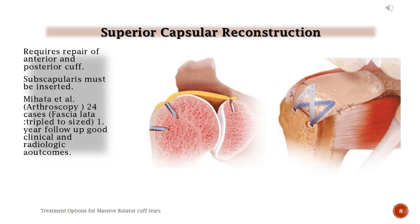Superior Capsular Reconstruction requires repair of the anterior and posterior cuff; subscapularis must be intact. Mihata et al. (Arthroscopy) reported 24 cases using fascia lata tripled to size — at one-year follow-up, good clinical and radiologic outcomes were achieved.